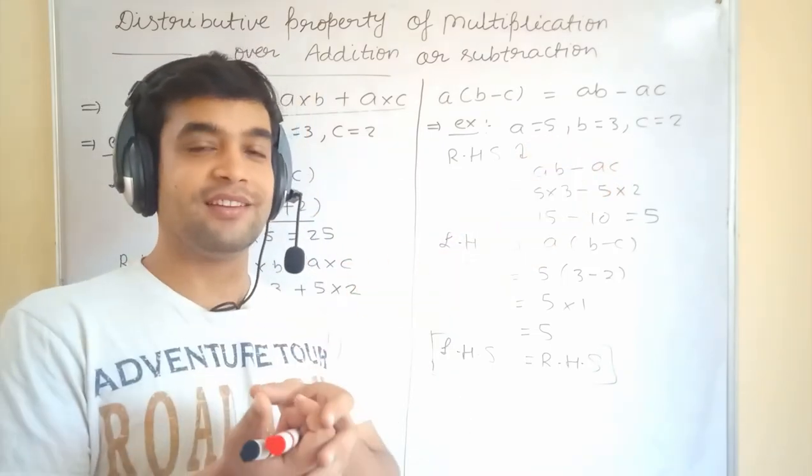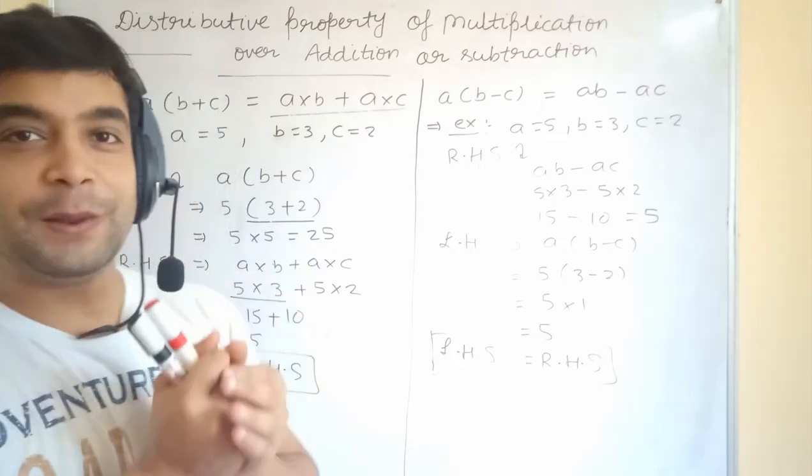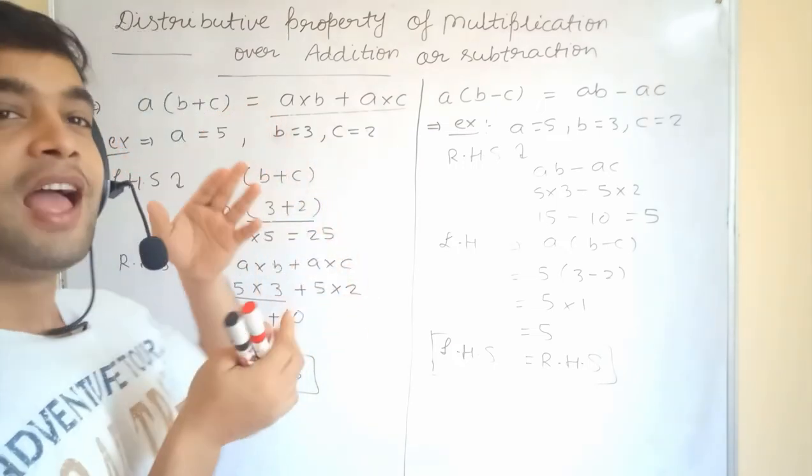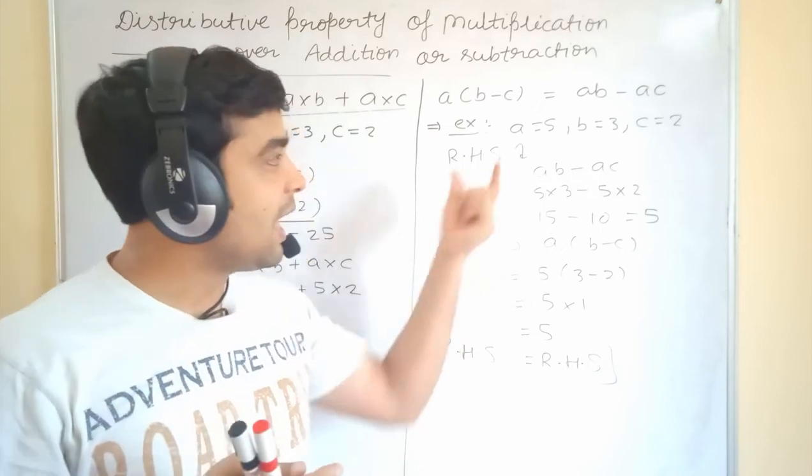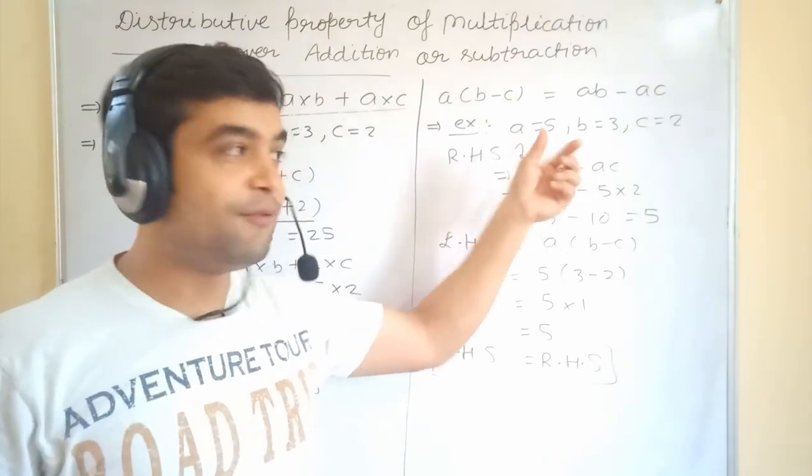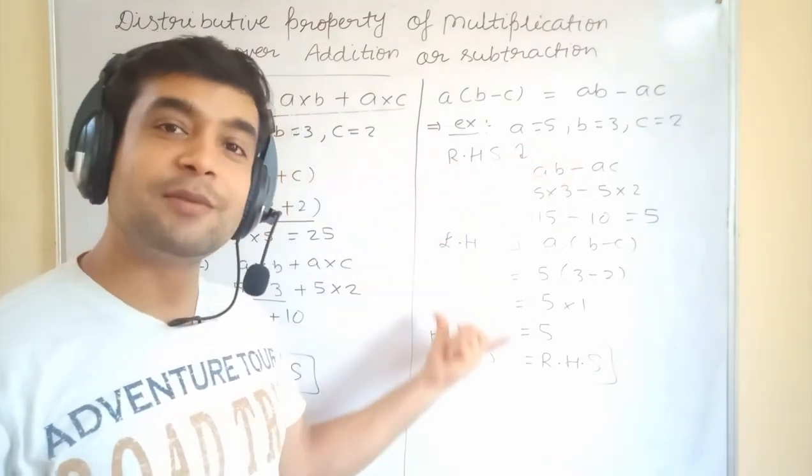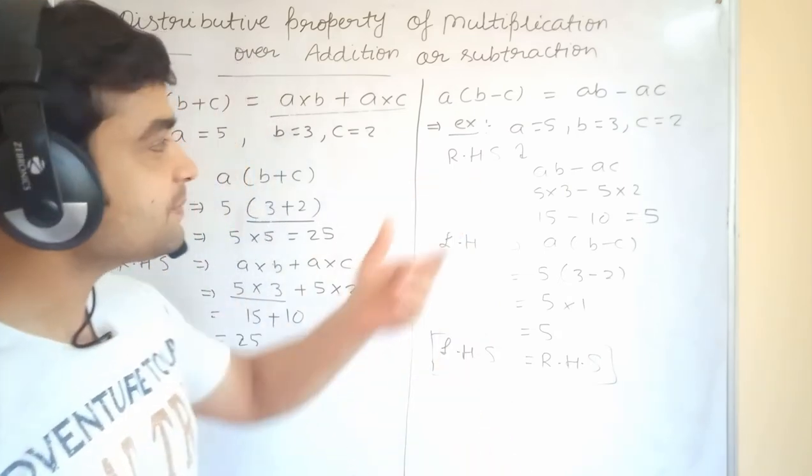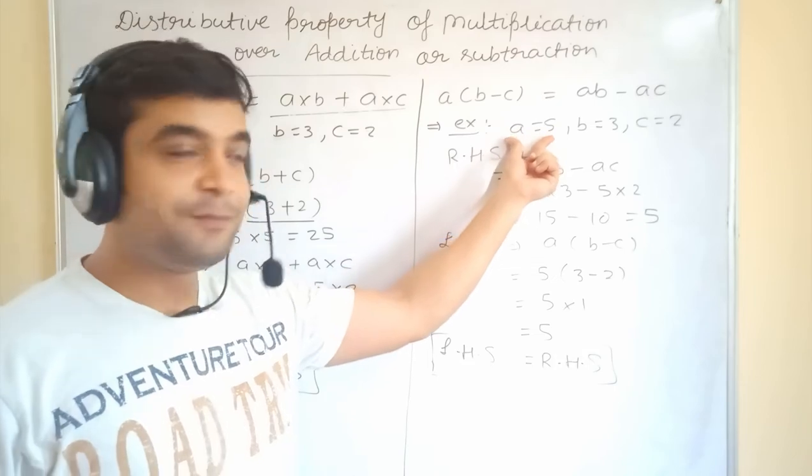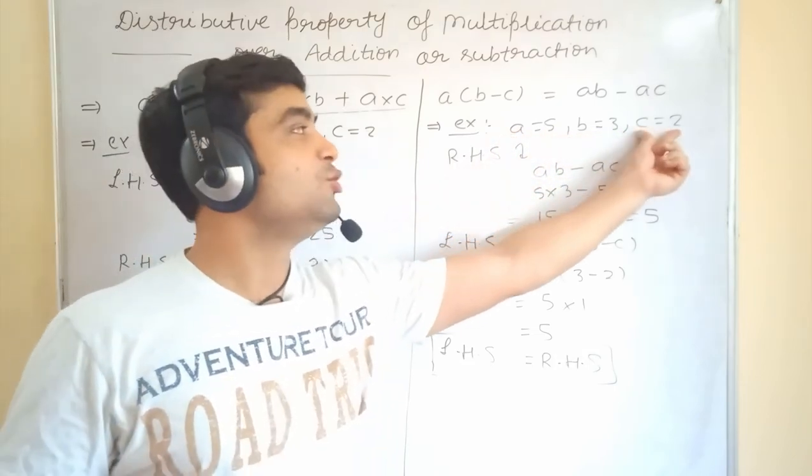We have to verify now. Without verifying, we cannot implement. That is why we are going to verify it. And, it is a very simple way to verify that. We take as example some numbers and we will put it and we will check whether it is coming equal or not. It is very simple. We are going to check it. So, A is equal to 5. B is equal to 3. C is equal to 5.